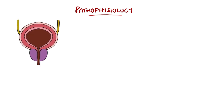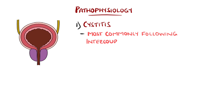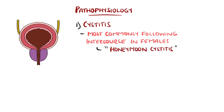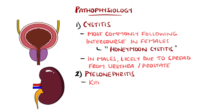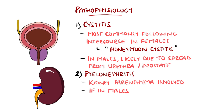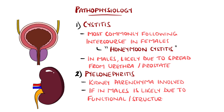Cystitis is inflammation of the bladder. In females, this is mostly following intercourse, which is what gave rise to the name honeymoon cystitis, while in males it's usually due to ascension of bacteria from the urethra or from the prostate. Pyelonephritis is when the kidney parenchyma is affected, and in females occurs frequently with no structural abnormality, while in males there is almost always a functional or structural cause.